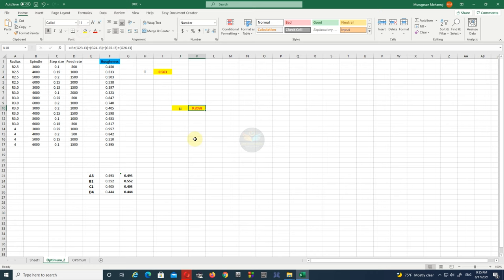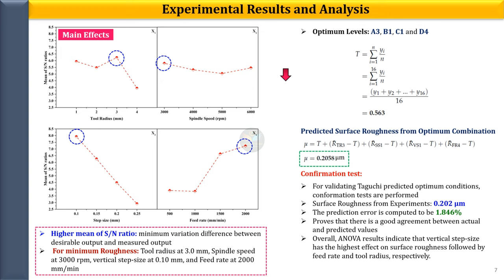Now we have to verify the optimized model against experimental data. I conducted one more experiment using the optimal conditions obtained from the Taguchi design, and from the measurement I got 0.202 micrometers as the surface roughness value. The prediction error was found to be above 2%, so we can say that the Taguchi design works fine for our problem and we can use it to minimize surface roughness. You can also apply this for your own problems; follow the same procedures for minimization, and I will make more tutorials covering maximization and fixing a target value.